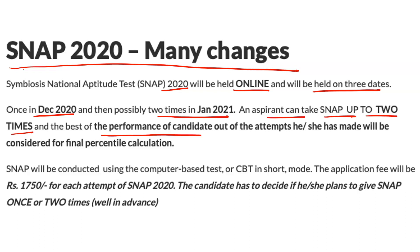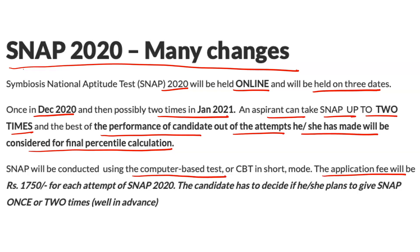You can attempt it twice, but you will have to pay for both attempts. The best performance out of the attempts made will be considered for the final percentile calculation. SNAP will be conducted using the Computer Based Test (CBT) format, and the application fee will be ₹1750 for each attempt of SNAP 2020.